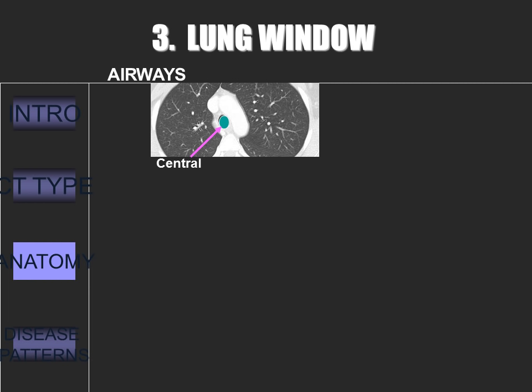Now we come to the most important window — the lung window. In this window, air appears black, aerated lung dark grey, and other structures white. There is an approach to looking at the anatomy here. First, we'll look at the airways. Look at the trachea and the central airways — is it patent? Are there secretions? Is it rounded? If it's rounded, it means that the patient has taken an adequate inspiration. If not, you'll have to question an inadequate inspiration or perhaps an expiration.